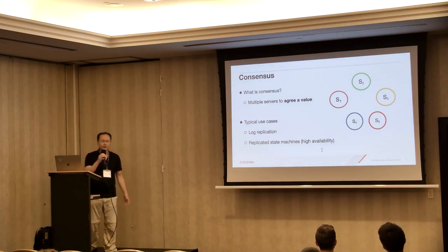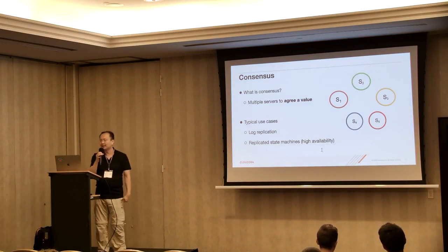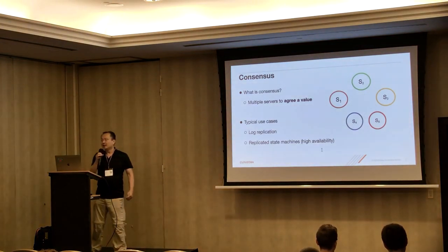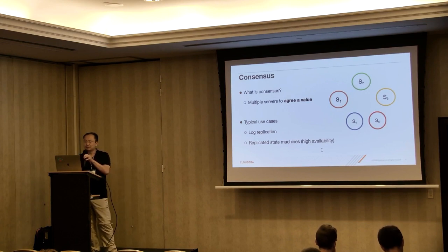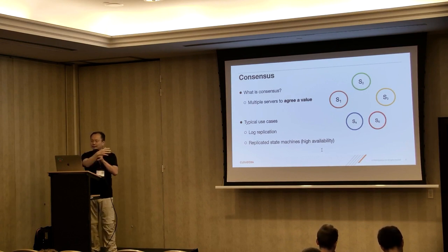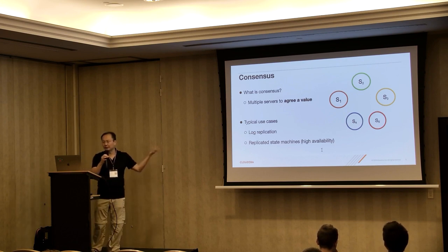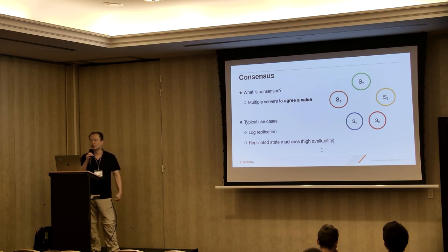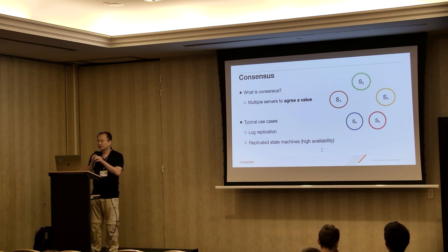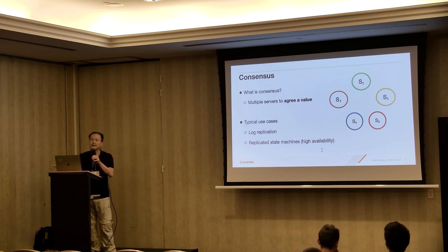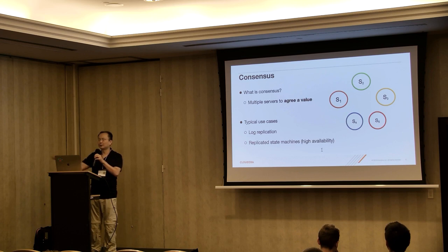First of all, we want to know what is consensus. Consensus basically involves multiple servers — we want them to agree on a value. For example, here we have five servers that want to agree on some value. The typical use case is that we want to do log replication and also for a replicated state machine. In other words, we want to have high availability.